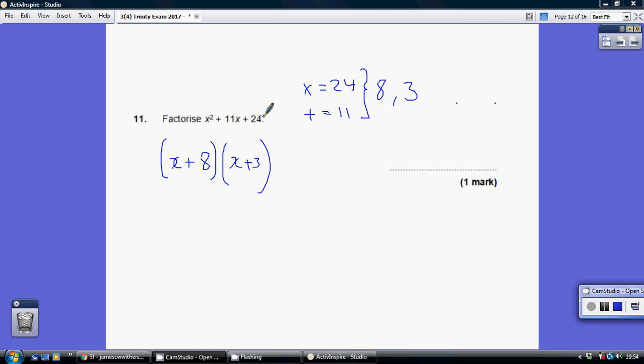So you start off by contemplating what two numbers multiply to make the number on the end, which is the 24, yet at the same time add to be the coefficient of the x, the number in front of the x, which is the 11. So what two numbers multiply to make 24 but add to be 11?